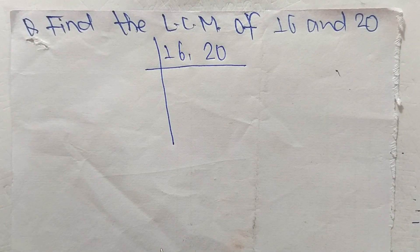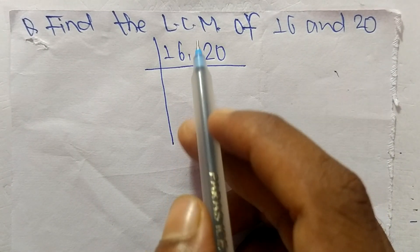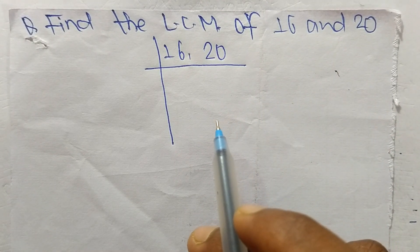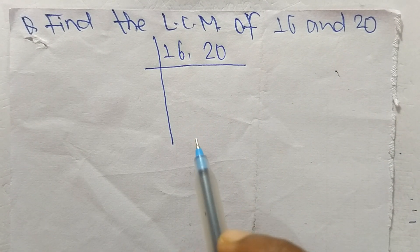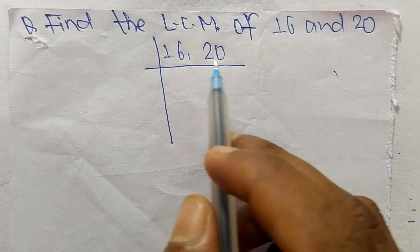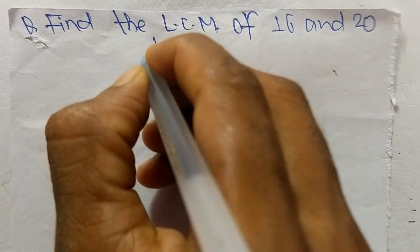So today in this video we shall learn to find the LCM of 16 and 20. To find LCM, first we have to choose the lowest number that can exactly divide 16 and 20, so the number is 2.